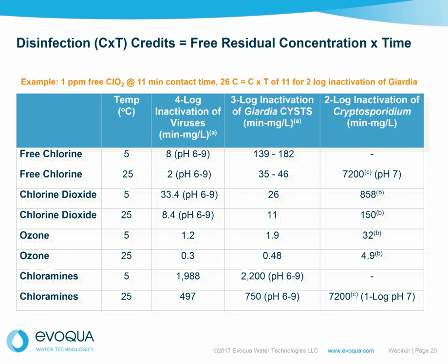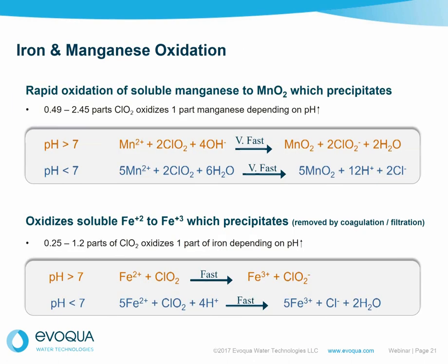The chemistry is pretty well understood. Above pH 7, we see very fast oxidation of manganese and iron. We see between 0.25 and 1.2 parts of chlorine dioxide able to oxidize one ppm of iron. It's a function of pH, but the reactions occur very quickly and are very effective — oxidation and settlement reactions allowing iron and manganese to be removed.